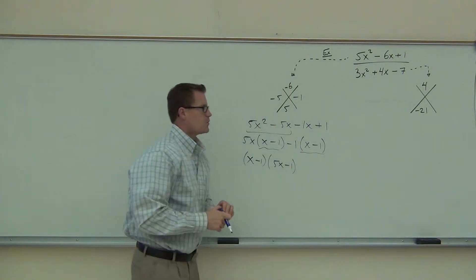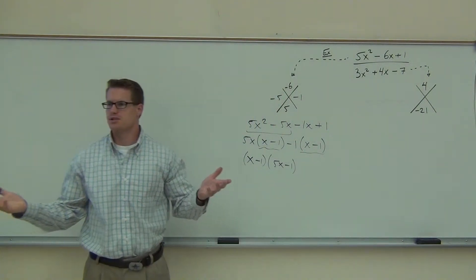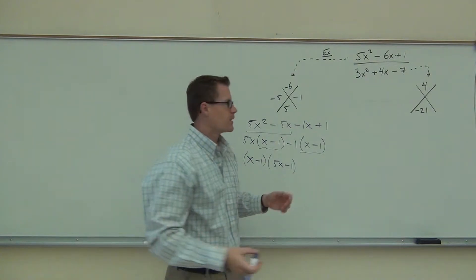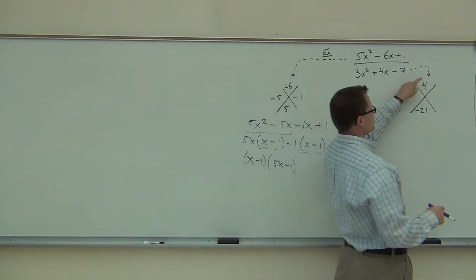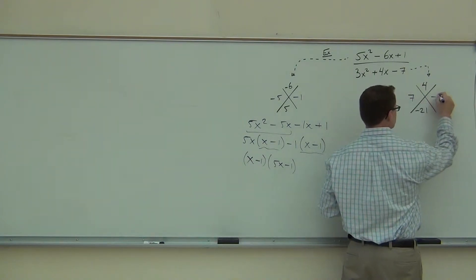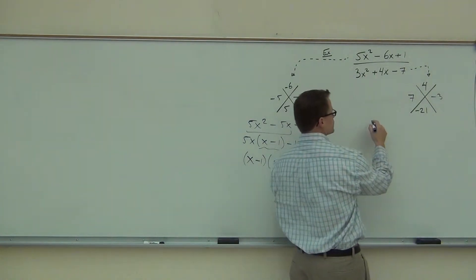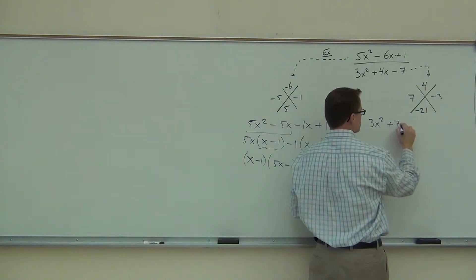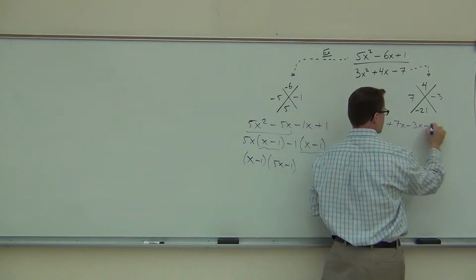Okay, next one we have 4 and negative 21. I'm looking at that, I'm seeing a 7 and a 3 somehow. Are you seeing a 7 and a 3 also? So, probably seeing a positive 7 and a negative 3. Again, we have to split our middle term up. 3x squared plus 7x minus 3x minus 7.